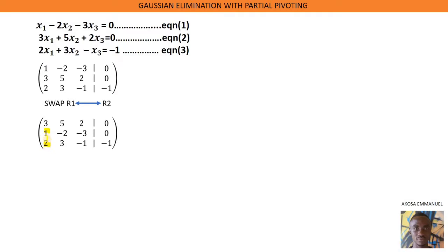We have to find a number that, when we multiply by the pivot element and add it to the entry in row 2, we get 0. We pick 1 divided by the pivot element and negate it, and we are going to get negative 1 over 3.